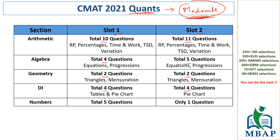From the CMAT level, it was a moderate paper. There was not much difference from expectations — arithmetic was expected to have more questions and indeed there were around 10 to 12 questions from different arithmetic areas. Algebra had four to five questions, including equations and higher-order equations. Geometry and mensuration had about one question each. Numbers in slot two was only one question, whereas in slot one there were five questions on numbers.